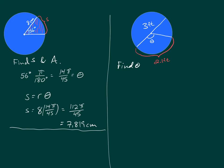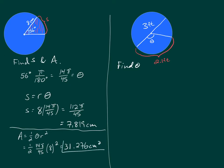Something very similar can be done to find the area of the sector — the red shaded region. Use the formula one-half times θ times r squared. Filling in θ = 14π/45 and r = 8, and computing on a calculator gives approximately 31.276 centimeters squared.